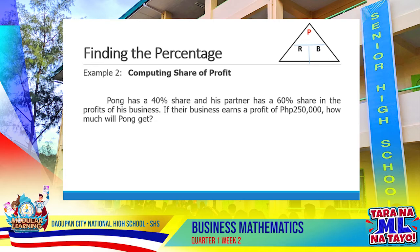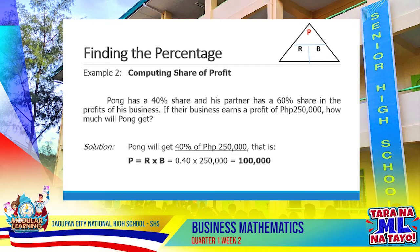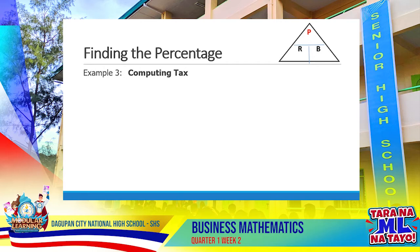Example number 2: Computing share of profit. Pong has a 40% share and his partner has a 60% share in the profits of their business. If their business earns a profit of 250,000, how much will Pong get? Solution: Pong will get 40% of 250,000. That is, 0.40 multiplied by 250,000 equals 100,000. Therefore, 100,000 is the share of Pong.